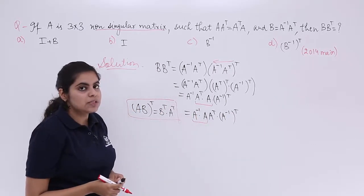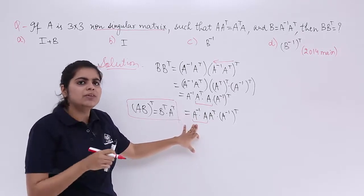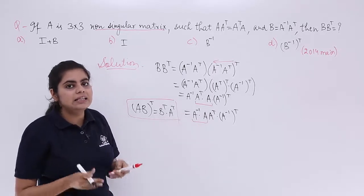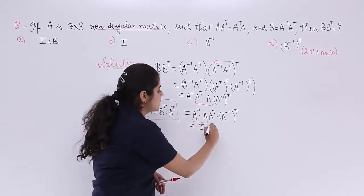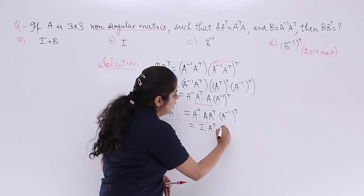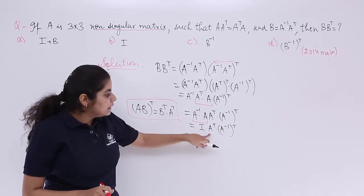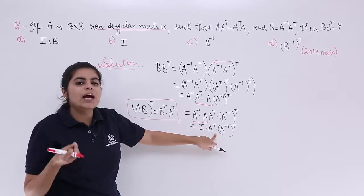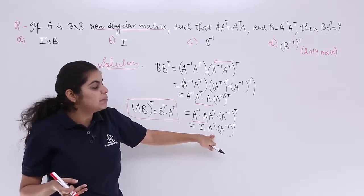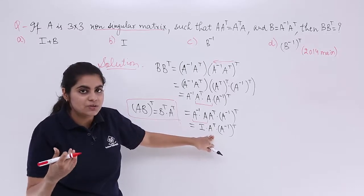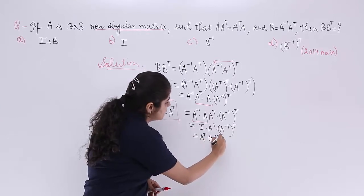We know that A-inverse multiplied by A equals the identity matrix I — this is a standard property. So the expression A-inverse times A gives us I, which is the identity matrix. Since identity matrix times any matrix is that matrix itself, it simplifies to A-transpose multiplied by A-inverse-transpose.